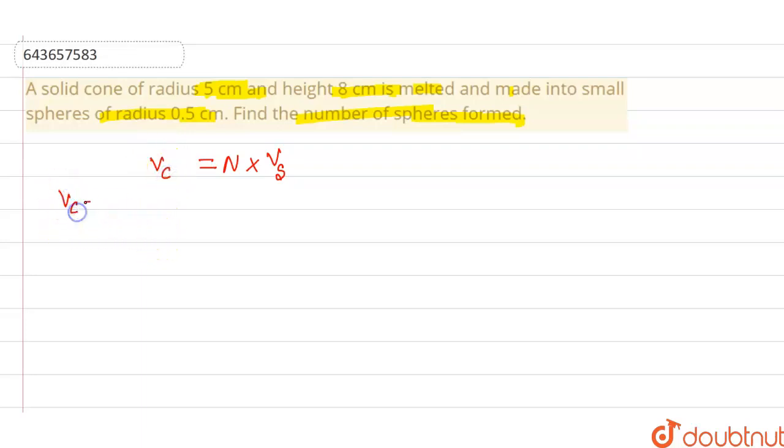Now, the volume of cone can be represented by 1 by 3 pi r radius of base of cone square h height of the cone. And volume of sphere can be represented by 4 by 3 pi r radius of sphere cube.